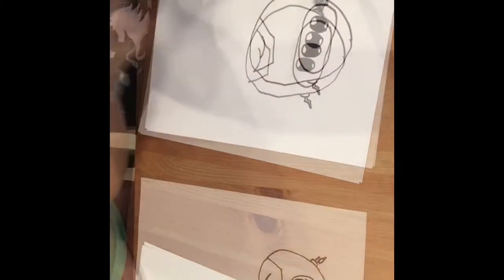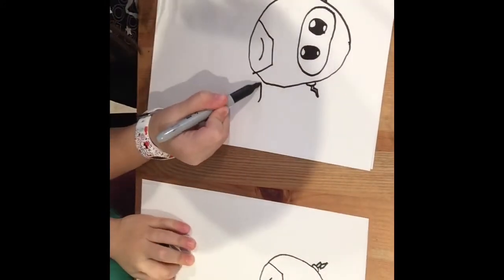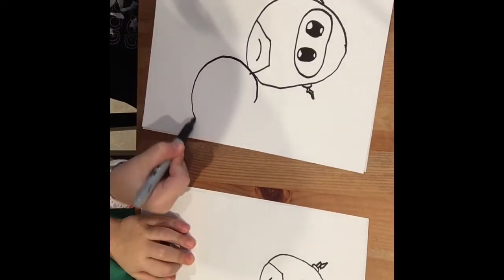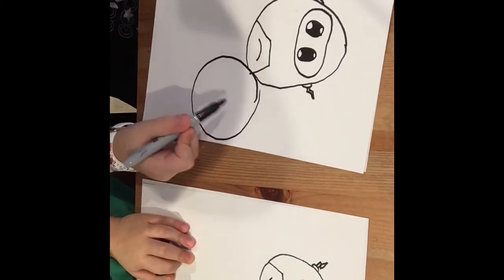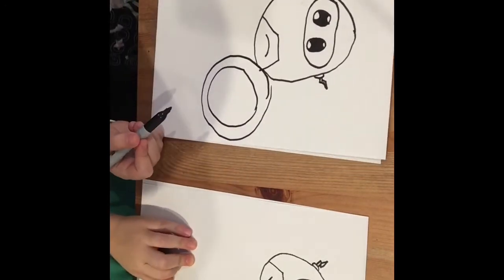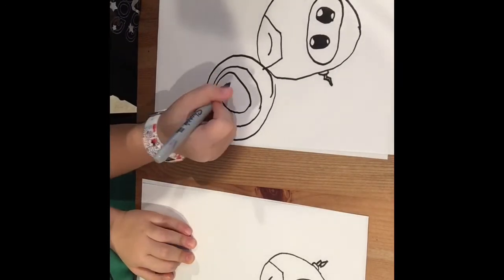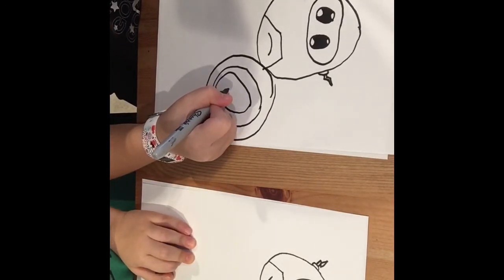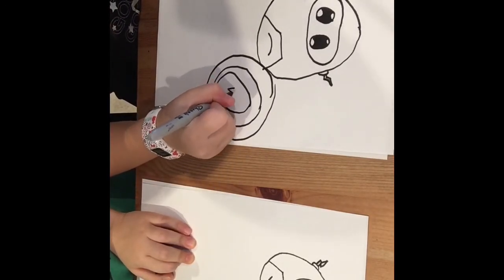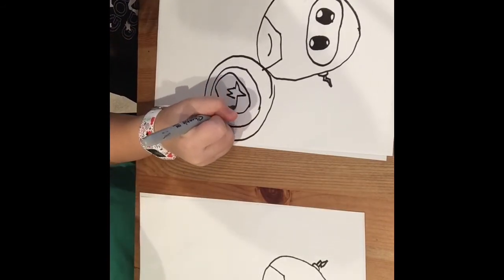Now we're gonna draw the shield. Draw a circle inside, a big circle. Another circle inside. And then one more circle. And then a star. I have no idea how to draw a star.